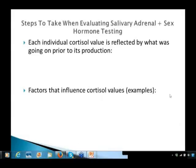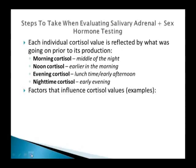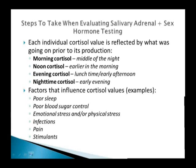Each individual cortisol value reflects what was going on prior to its production. The morning cortisol indicates what was happening in the middle of the night; noon cortisol reflects early morning; evening cortisol reflects lunchtime or early afternoon; and nighttime cortisol reflects early evening. A number of factors influence cortisol values: poor sleep, stimulant use particularly caffeine at night, pain, infections, mental and emotional stress, physical stress, and probably most important for many people — poor blood sugar control.